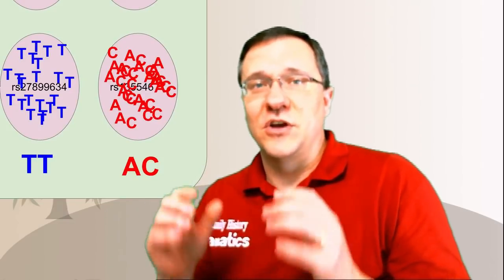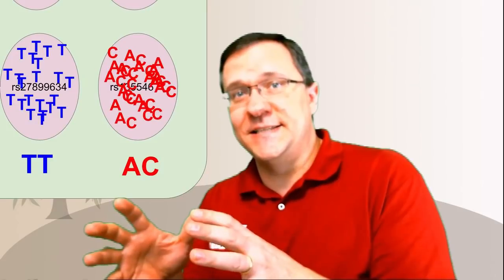The computer will look at that pile and count up how much of each letter it sees. Usually there's only going to be one or two letters. For instance, if you have a pile of A's and only A's, the computer is going to say that this location is AA. If your pile consists of about half A's and half C's, it's going to say that this is an AC. This is because half of your DNA — one chromosome — had an A at that location and the other chromosome had a C at that location.